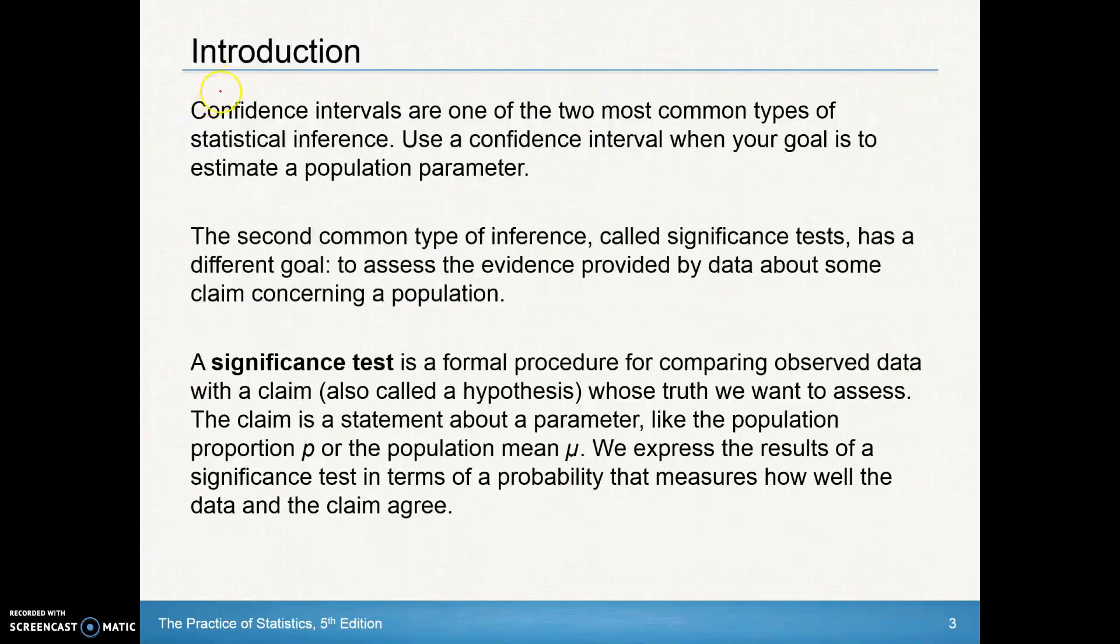As an introduction, confidence intervals are what we've been looking at back in Chapter 8. They're one of the two most common types of statistical inference. Statistical inference is a major portion, about 25% of the AP exam. We use a confidence interval when our goal is to estimate a population parameter. The second most common type of inference is called significance tests. It has a different goal: to assess the evidence provided by data about some claim concerning a population. In other words, somebody's going to make a claim that something is true in the population, and we're going to collect some data about that and either prove or support the idea that was claimed.